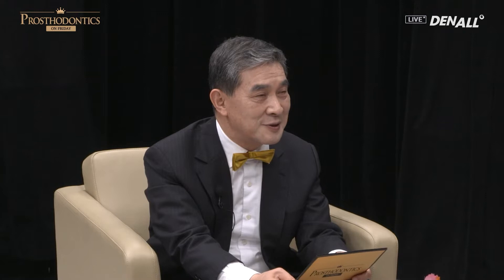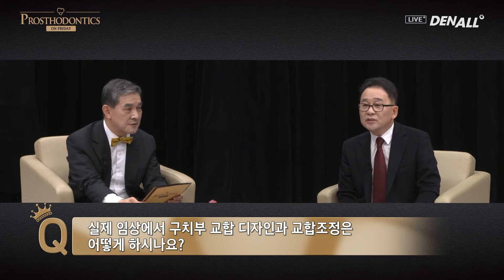Many clinical researchers say that, compared to a natural tooth, to protect the implant, vertical and lateral forces need to be reduced. How do you implement that in a clinical setting? I think the most important thing is stable occlusion formation on MIP. Secondly, widening centric. Number three, anterior guidance as much as possible. Those three principles need to be implemented.